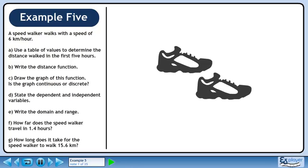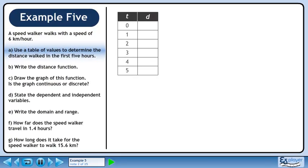A speed walker walks with a speed of 6 km per hour. In Part A, we will use a table of values to determine the distance walked in the first 5 hours.